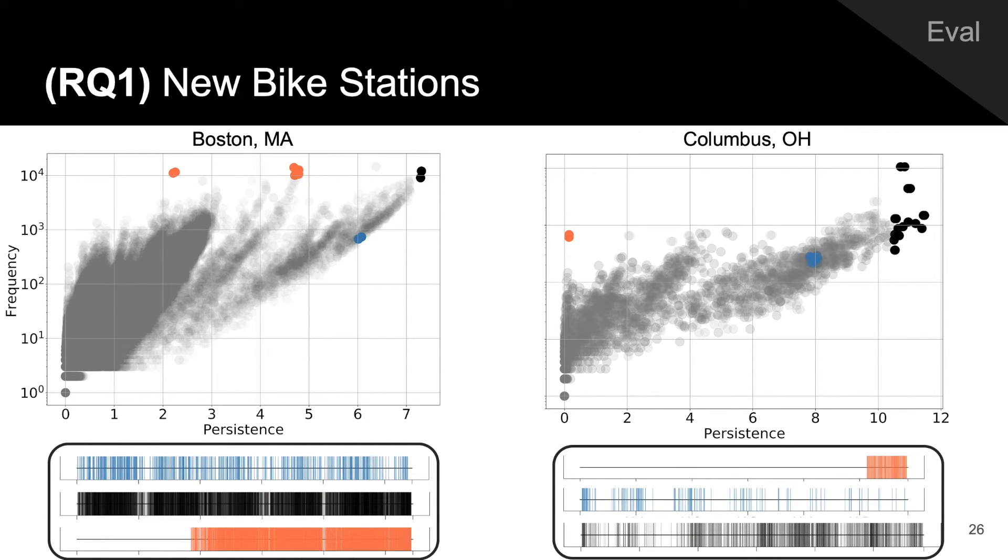In bike networks, we find that the most persistent snippets are often reasonable commute routes, such as in Boston, where the most persistent trip is from Massachusetts Avenue in front of MIT, up the street to outside the central subway station. This is a reasonable route for commuters to ride bikes from MIT to the subway. Bursty snippets allowed us to discover the opening of new popular bike stations in both Boston and Columbus.